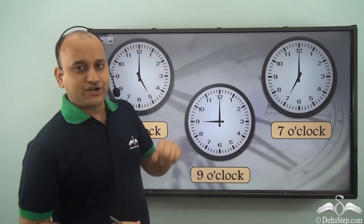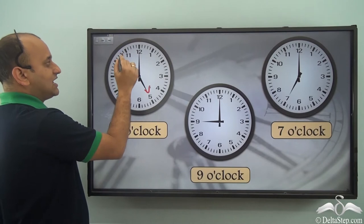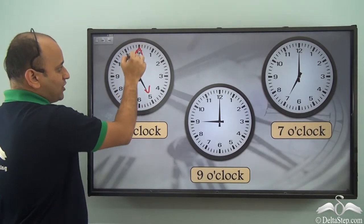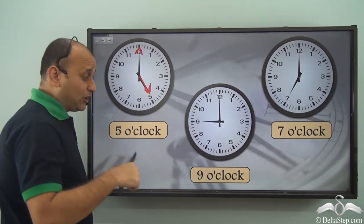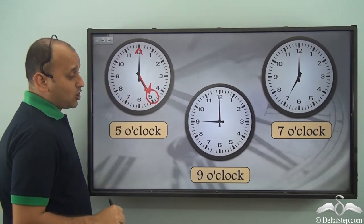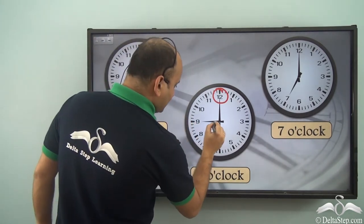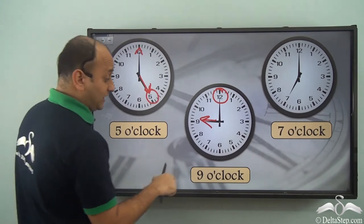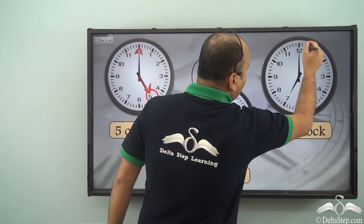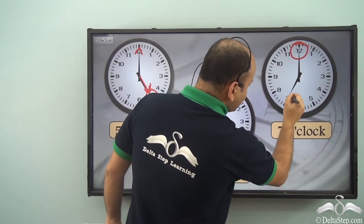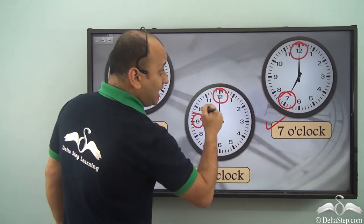Let's see some other examples. Here the smaller hand is pointing to five and the larger is pointing to twelve, so this is five o'clock. Similarly in this case the longer hand is pointing at twelve, so the time is where the smaller hand is pointing — nine o'clock. Similarly here the longer hand is pointing to twelve and the smaller hand is pointing to seven, so it's seven o'clock. This is how you can tell the hour of the day.